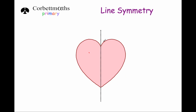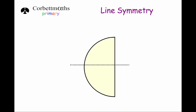Here we've got a picture of a heart. This heart has got one vertical line of symmetry. The reason is if we look at this left hand side and fold it over this way, it would land exactly on top of the other part of the heart. Therefore it's got one line of symmetry. Here we've got a semicircle. This semicircle has also got one line of symmetry, but it's a horizontal line of symmetry this time. If you look at the top of the semicircle and fold it down, it would land exactly on top of the bottom half. So it's got a line of symmetry as well.